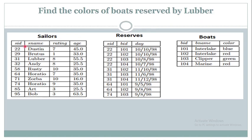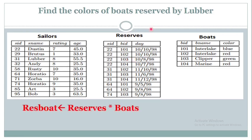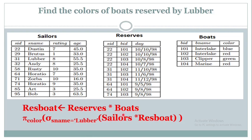Luber is nothing but the Sailor Name. I need to find the colors of boats reserved by sailor Luber. First, I will join Reserves and Boats — we can perform a natural join because Boat ID is common in both Reserves and Boats. After joining, we perform another join operation with Sailors. Ultimately, I can just retrieve those tuples where Sailor Name is equal to Luber, and finally get the color of those boats.